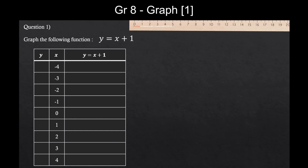Question 1: Graph the following function. Pause the video for a moment and first write down the question, and also make this chart. You need three columns and ten rows, including the first line. Then let's give numbers to x — we're going to go from minus 4 to 4. Then we can continue after you have made this chart.